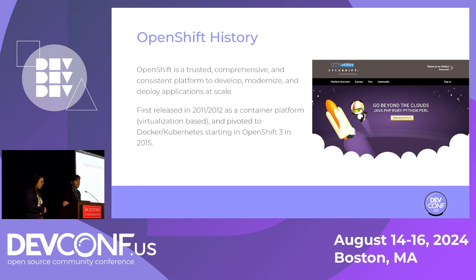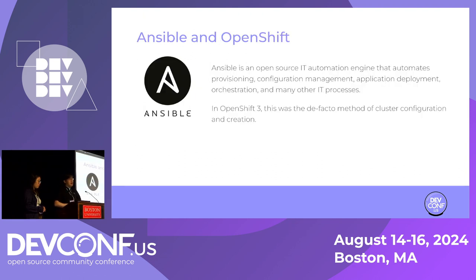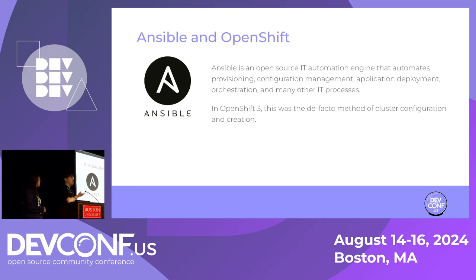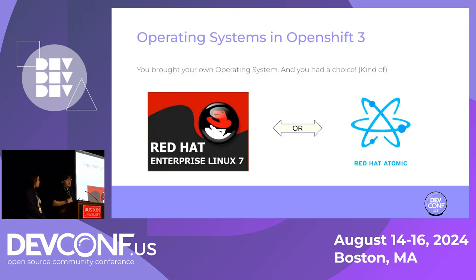OpenShift 3 is when we here at Red Hat made the switch to Kubernetes and containers as the foundational pieces to build our platform. I can't talk about OpenShift 3 without talking a little bit about Ansible. If you've never heard about Ansible, think of it as a really, really fancy bash script - don't tell the Ansible team I said that. It's a way for you to configure your application deployment, orchestration, and many other processes via these really cool playbooks where you define what you want the system to be and do.